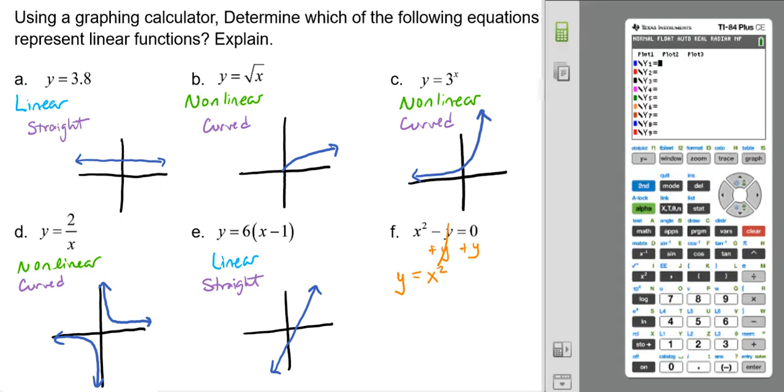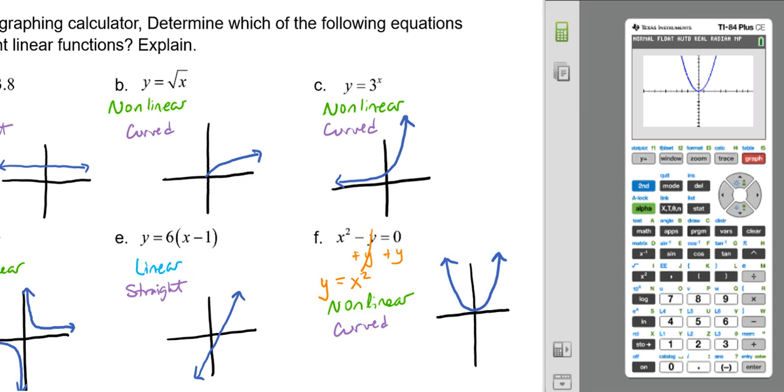And now we can plug that into our calculator, x squared. So notice I had to hit the x first before I could hit the square button, even though it says x squared. It means you're just going to square whatever you put in. So I hit graph, and that is definitely going to be curved. So this is going to be nonlinear because our graph is curved.